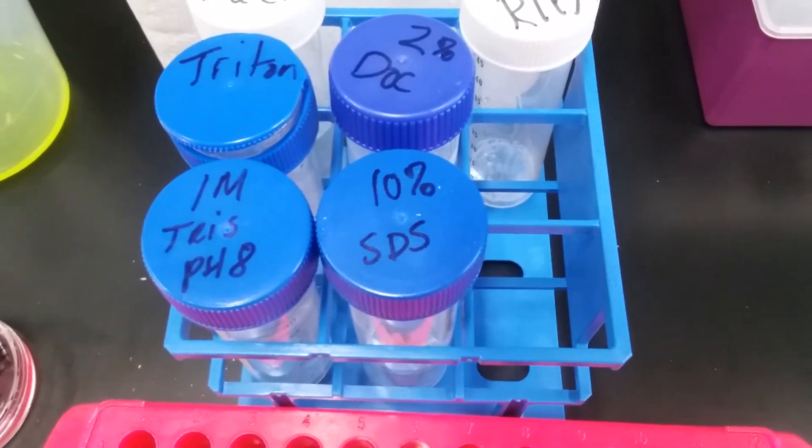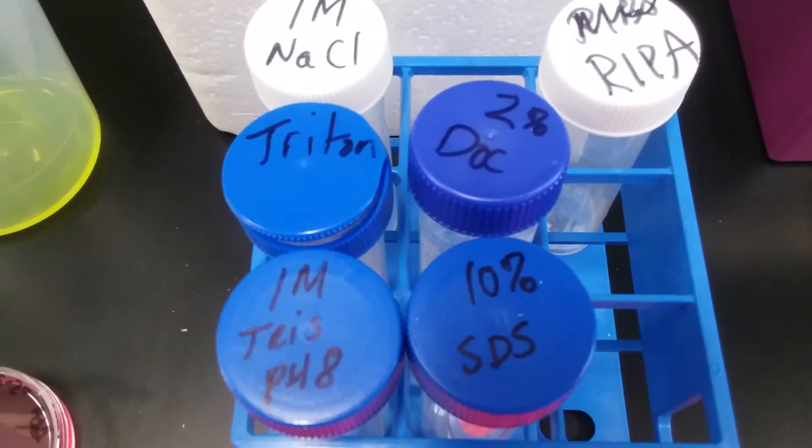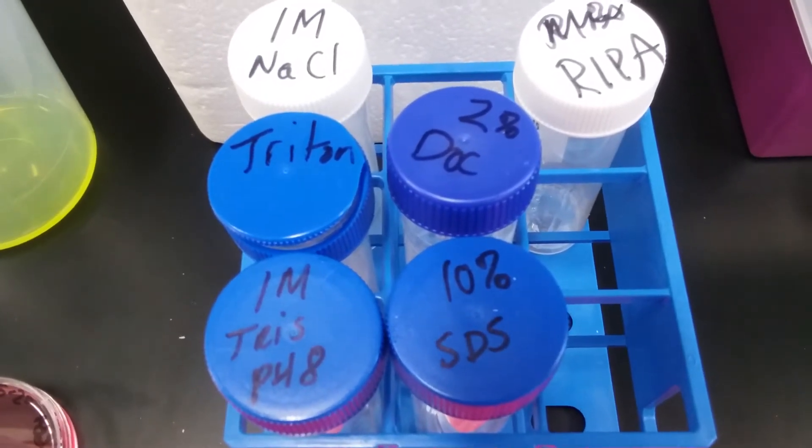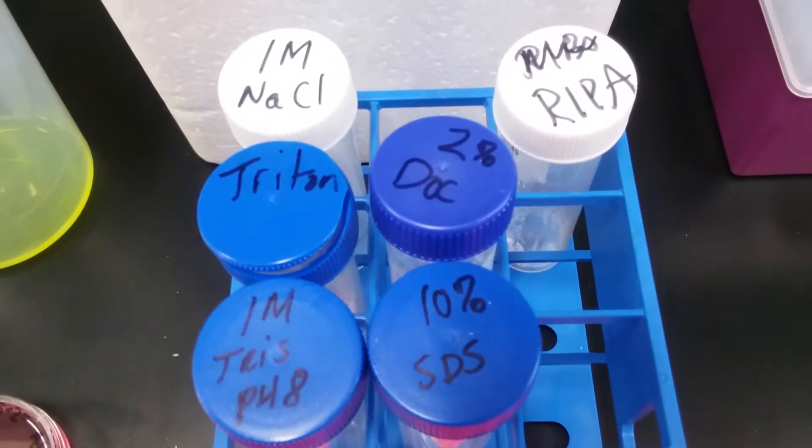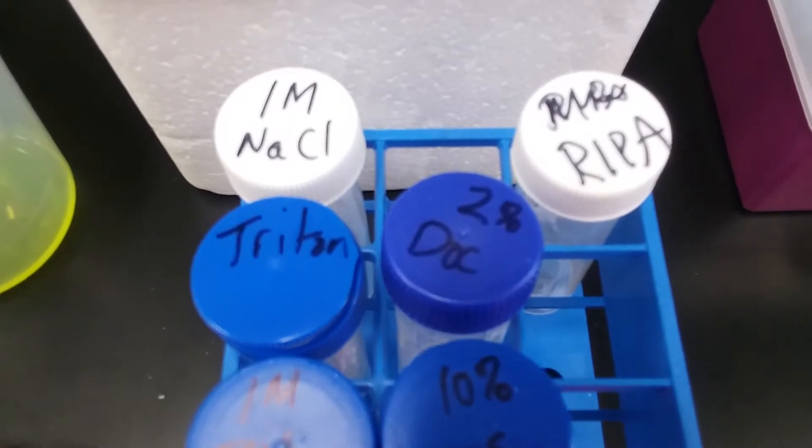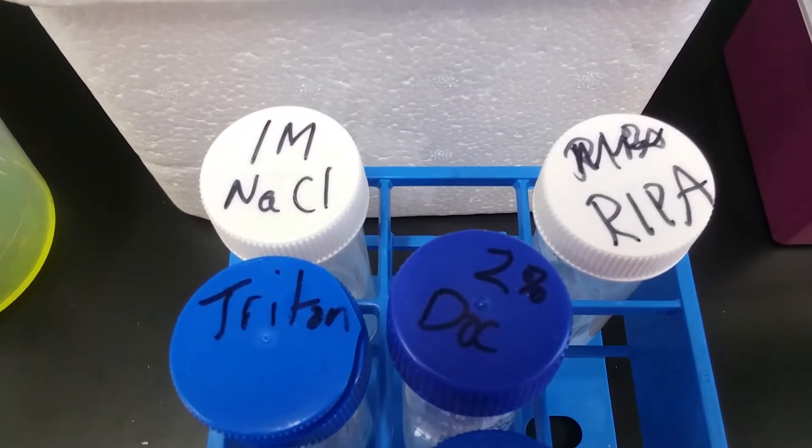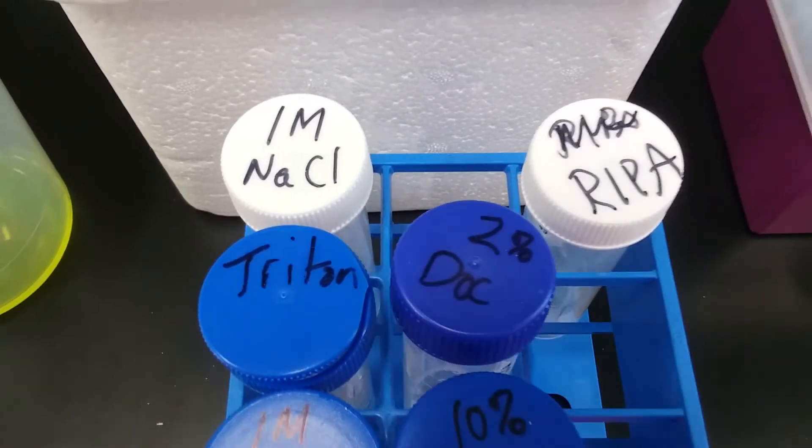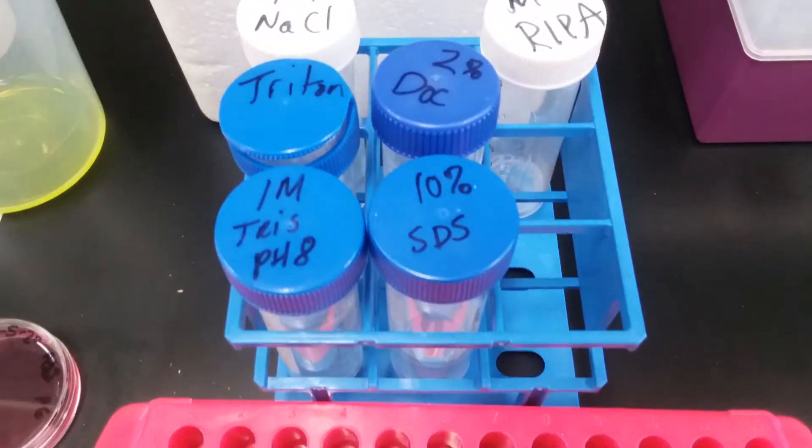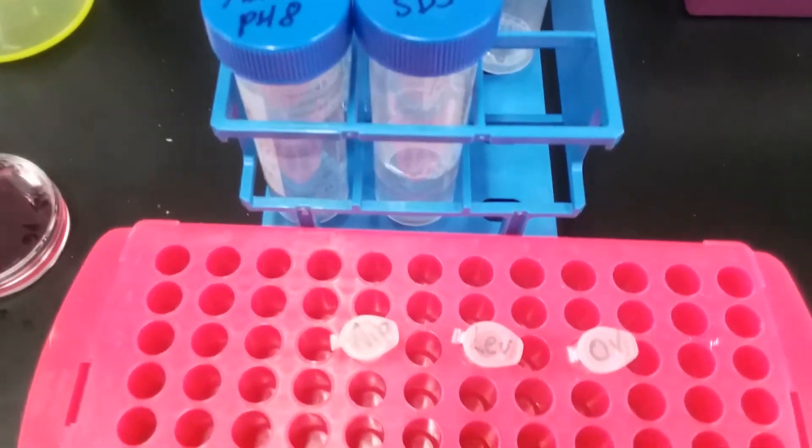One ionic SDS and two non-ionic Triton X-100 and deoxycholate. These detergents will help us break apart the lipid-lipid, lipid-protein, protein-protein interactions within the cell that are going to keep us from lysing any of the membranes. We'll then add some sodium chloride which will capture any ions that we don't want impacting our proteins.